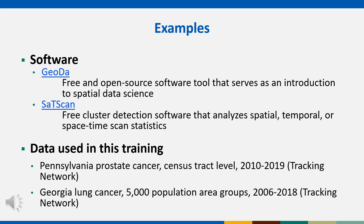Georgia lung cancer rates and SIRs are available at the 5,000 population aggregation, which is part of the tracking network sub-county aggregations. A point to stress: all analyses, results, and interpretations are for the sole purpose of demonstrating the software and processes that can be involved in a cancer cluster analysis, and should only be viewed in this context.